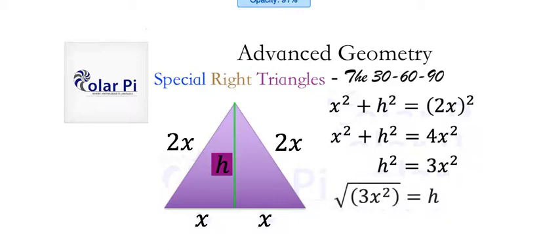The square root of h² is just h, and the square root of 3x² can be simplified using square root rules: √(3x²) = √3 × √(x²) = x√3. So h = x√3.